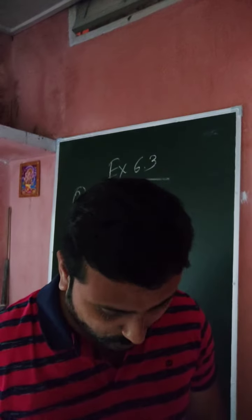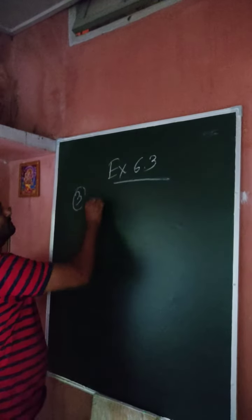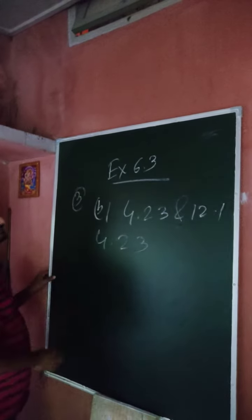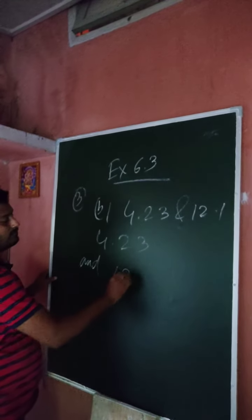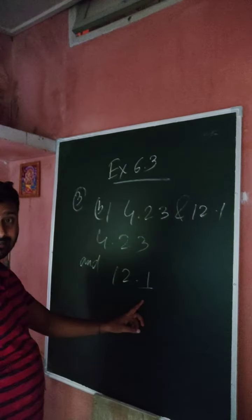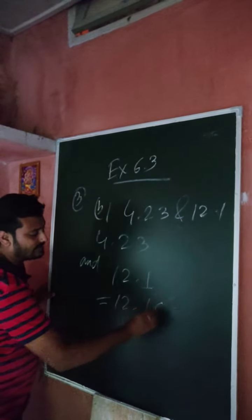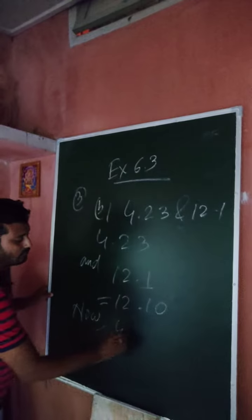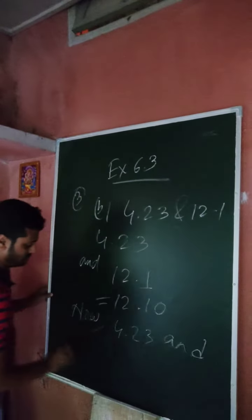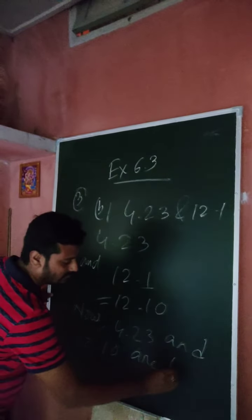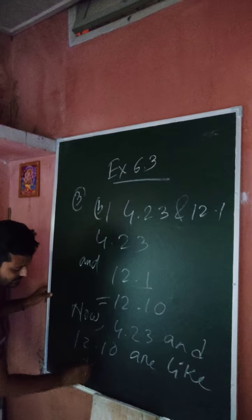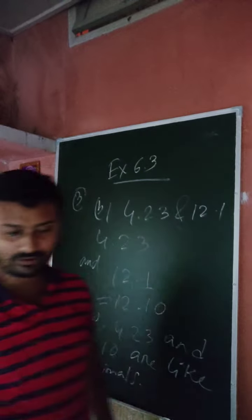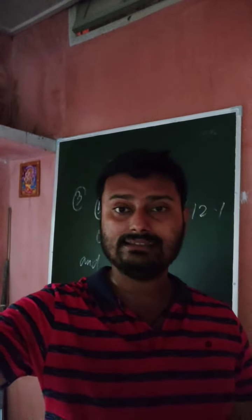So, next question. Next question is what? 4.23 and 12.1. So, B. 4.23 and 12.1. So, 4.23 remains same. And 12.1. So, in this case, you can convert unlike decimals into like decimals.